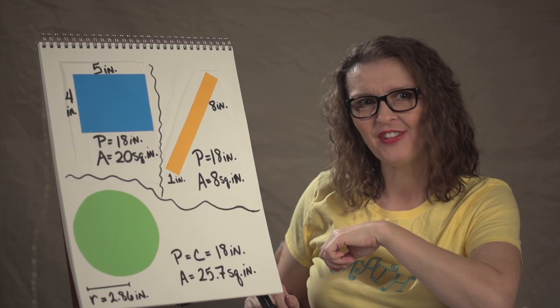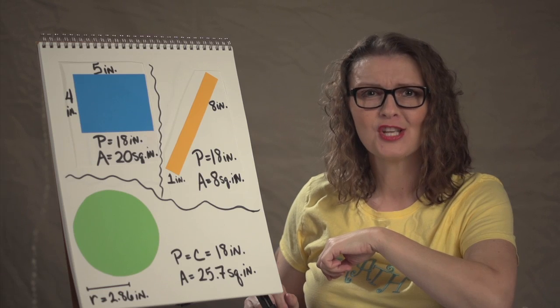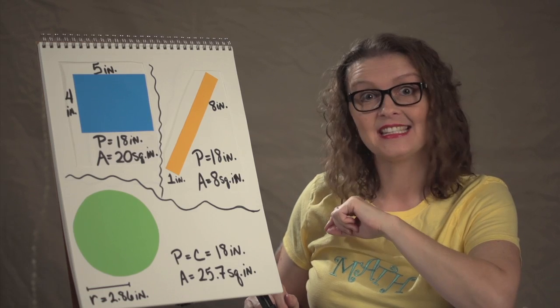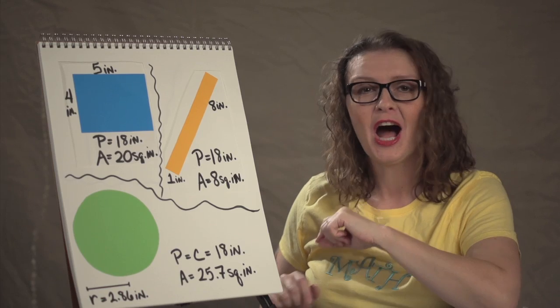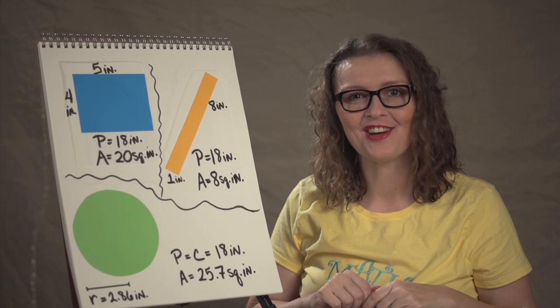So there you have 3 different figures with the same perimeter and different areas. So yes, figures with the same perimeter can indeed have different areas. I'm Bonnie Crowder with Math4.com, reminding you that math is not a 4 letter word.